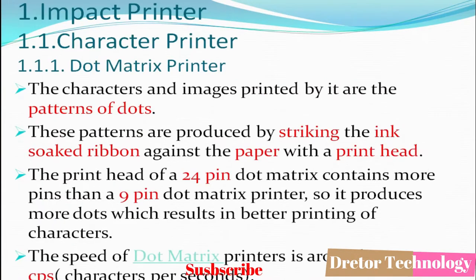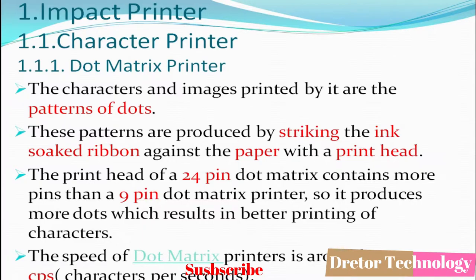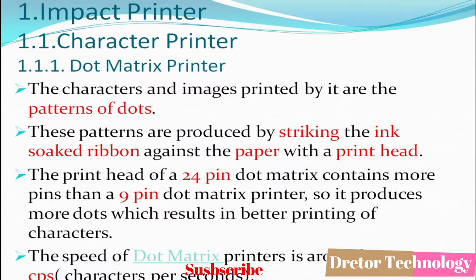The dot matrix printer is an impact printer and a character printer. The characters and images it prints are patterns of dots. This pattern is produced by striking an ink-soaked ribbon against the paper with a print head. Dot matrix printers are commonly used for passbook printing.